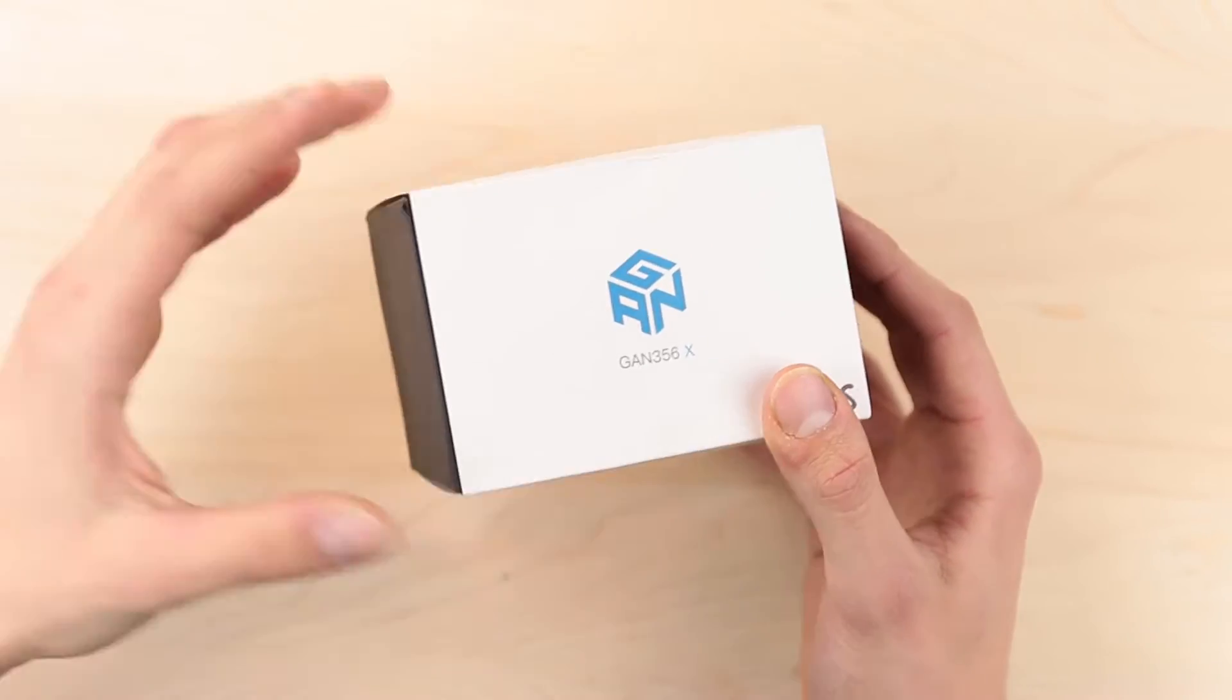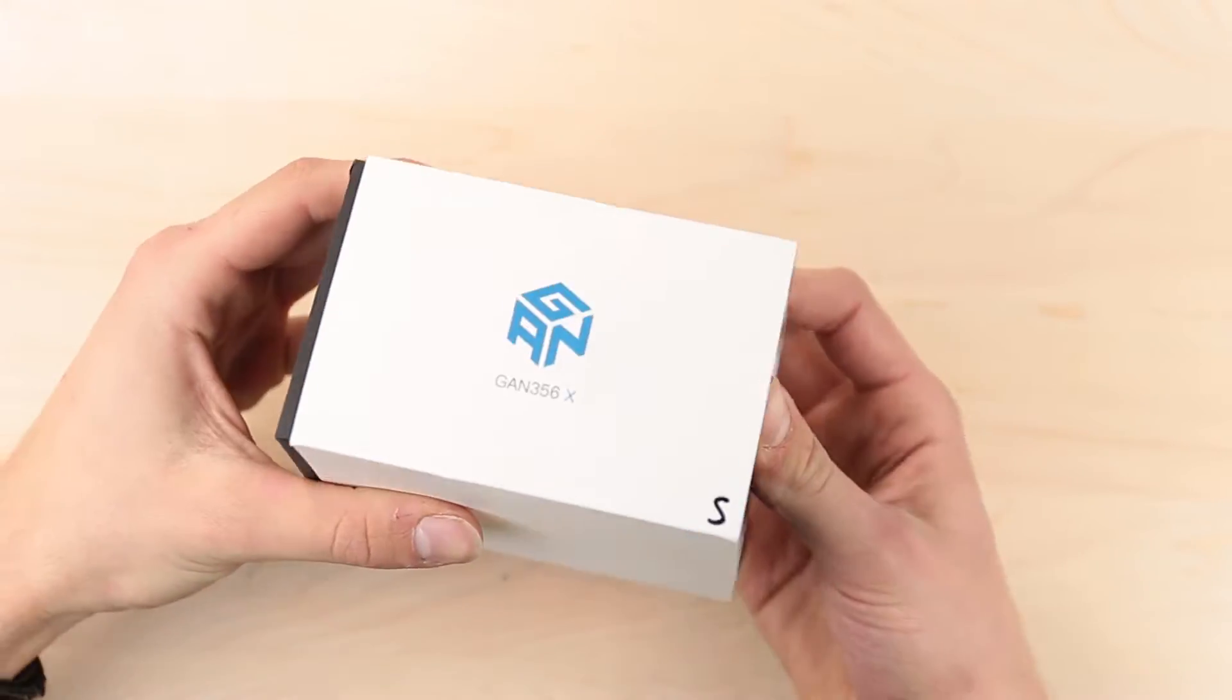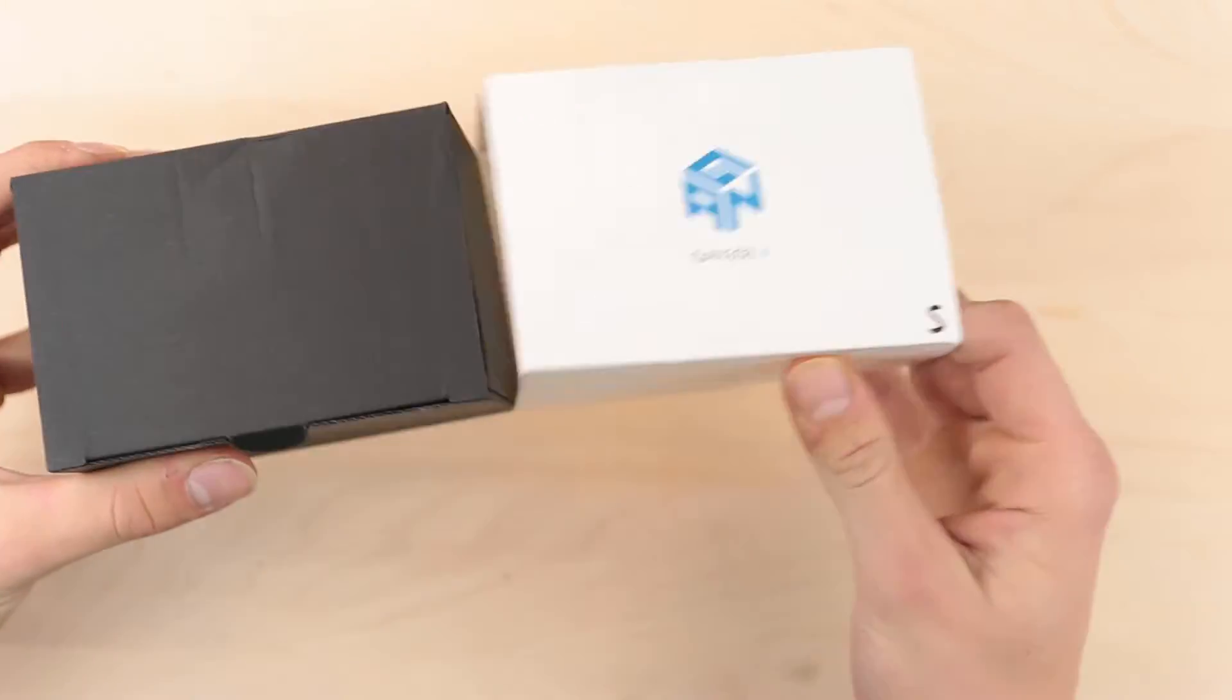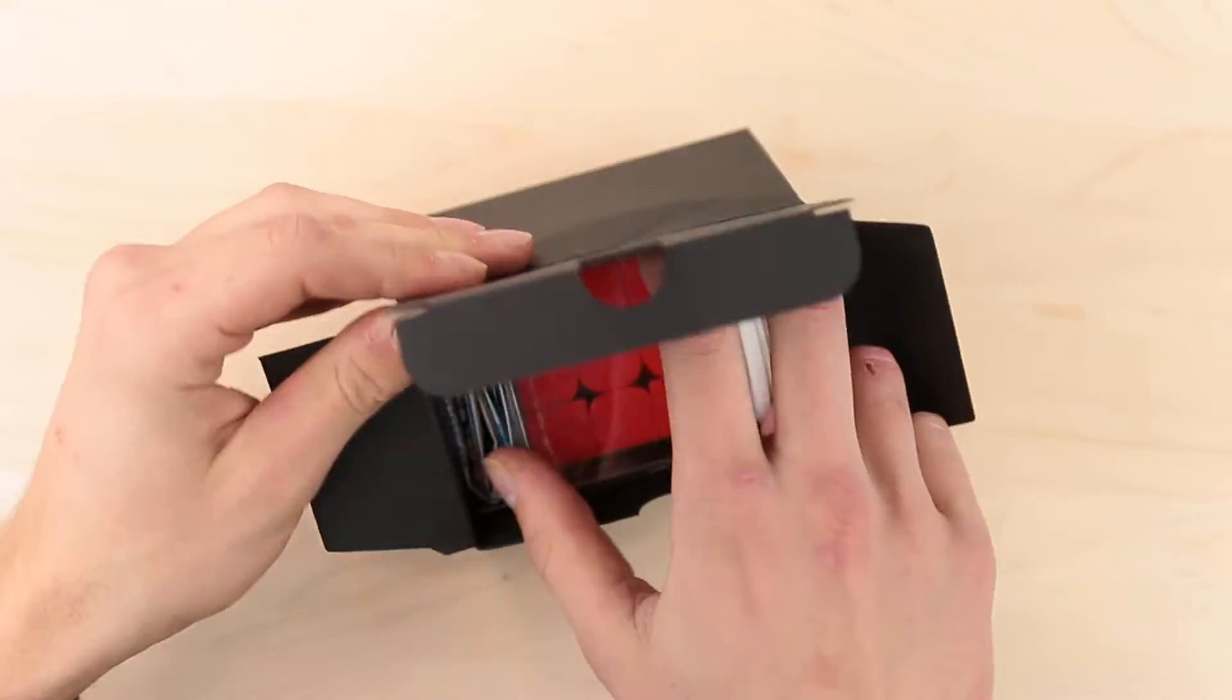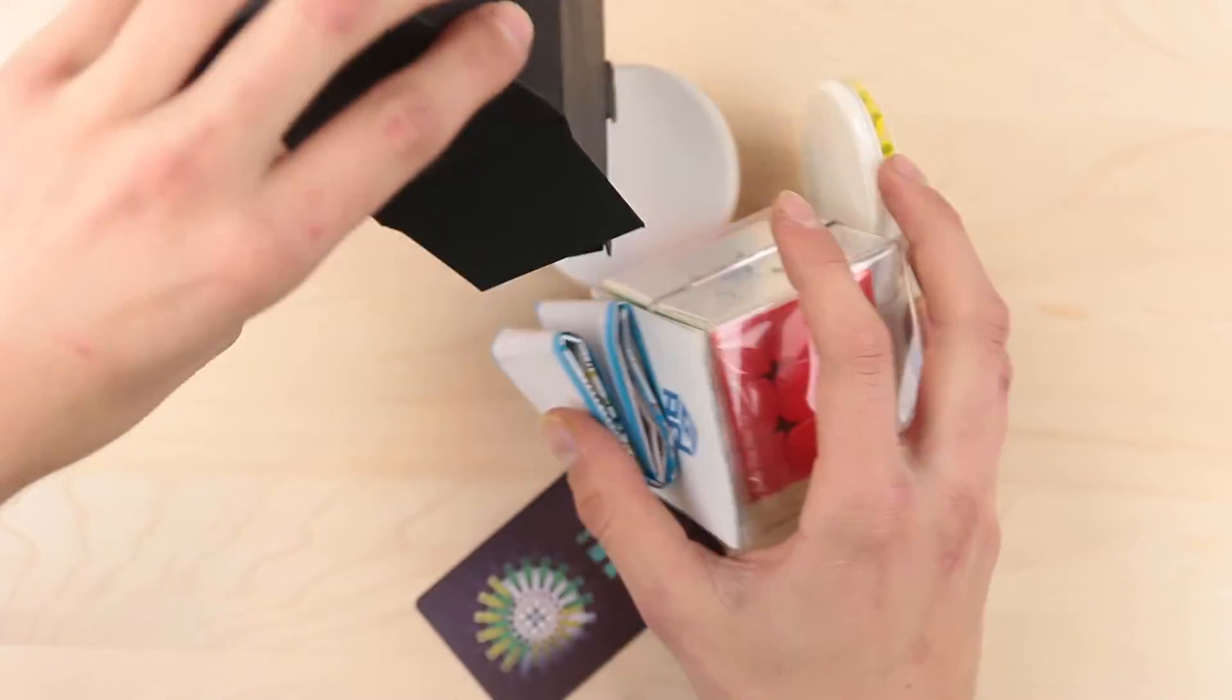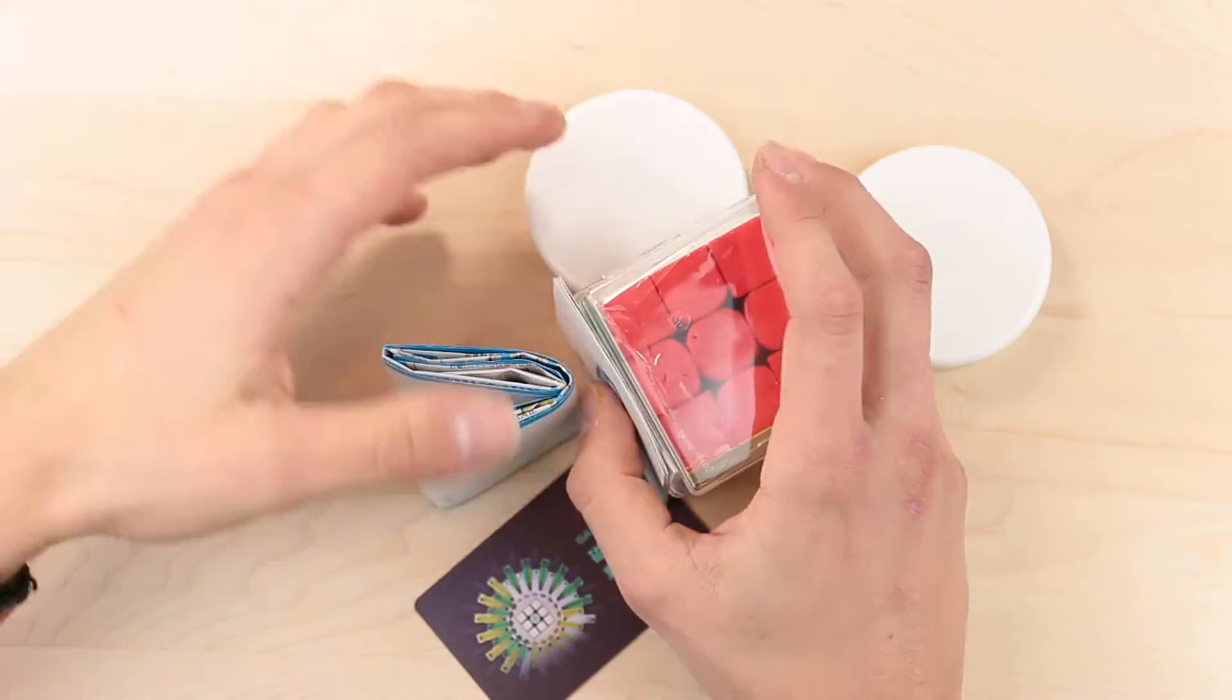Alright, so it comes in GAN's normal black box with a white sleeve, and we're just going to push the sleeve off. It has S here, which I assume is for stickerless, because that is what I got it in. So we'll open it up, and yeah, it's in stickerless. Let's put this aside.